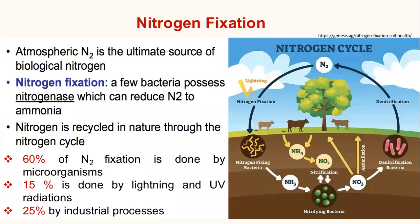First, let's understand how nitrogen from the atmosphere gets into amino acids. Nitrogen fixation is a process usually carried out by certain microorganisms like bacteria which possess a special enzyme known as nitrogenase, which is capable of reducing atmospheric nitrogen to ammonia. This nitrogen is recycled in nature through what we call the nitrogen cycle.